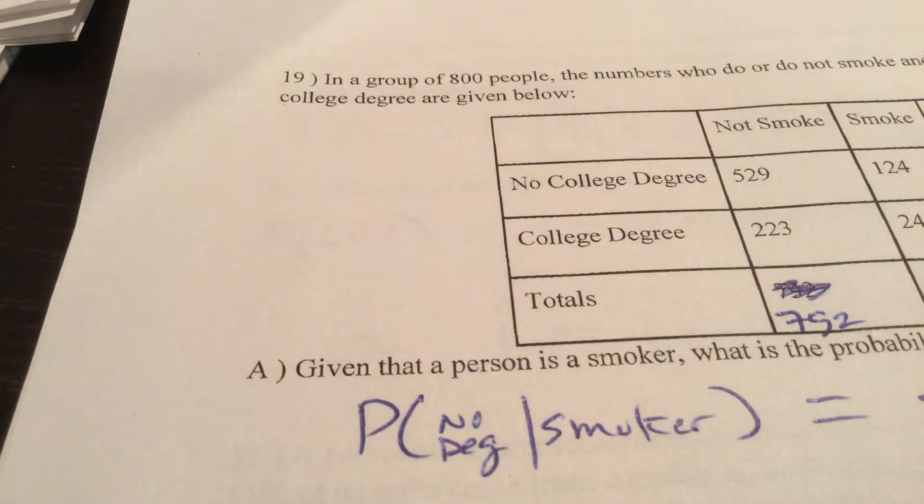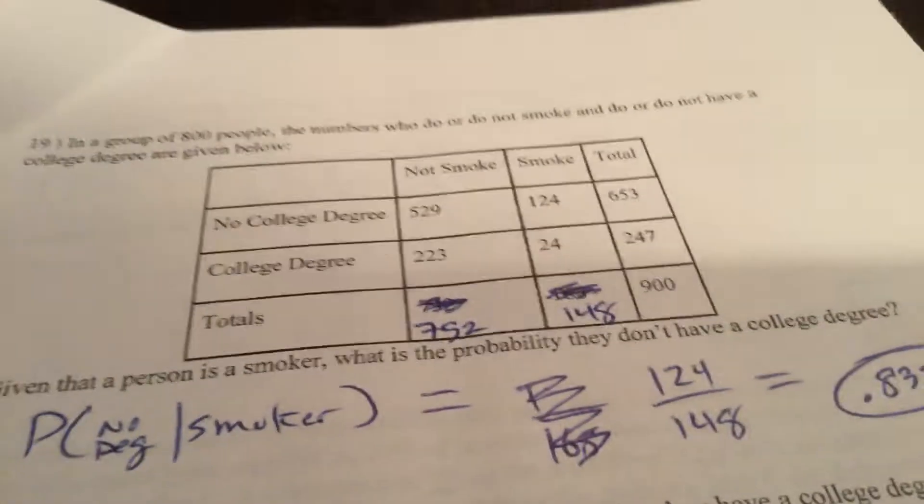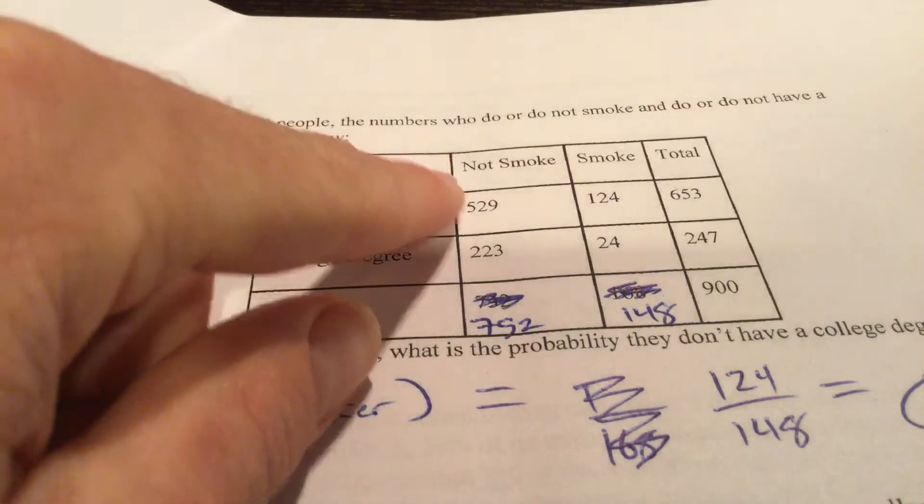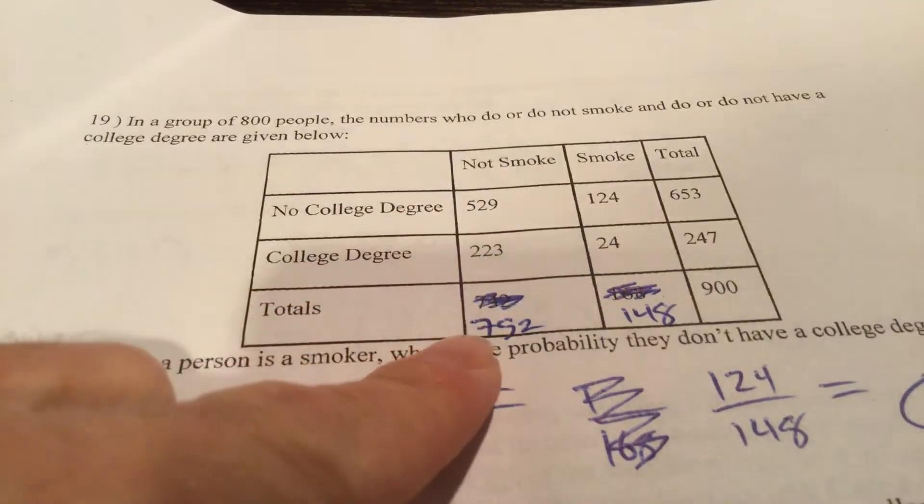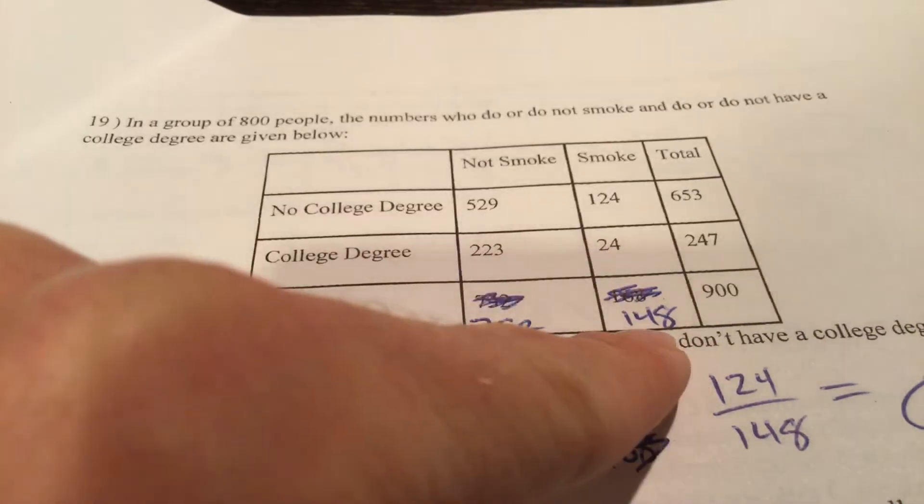And stats for the last video here for today. Here is your data. 800 people. You do have to make this correction. Add them up. I made a mistake. That's 752 there. Add them up. That's 148 there.